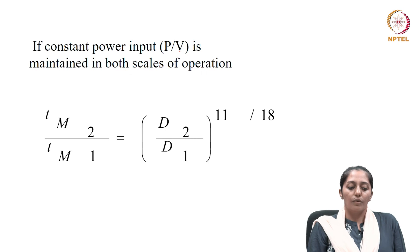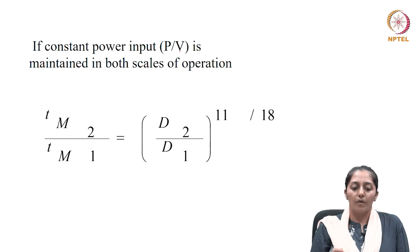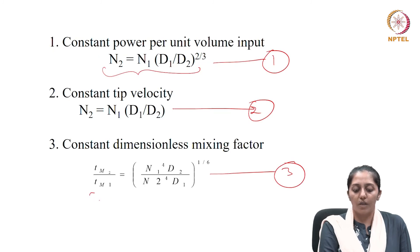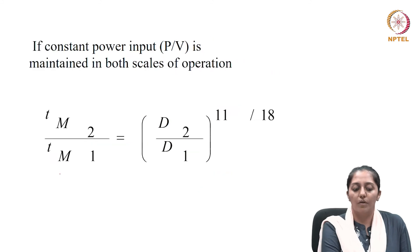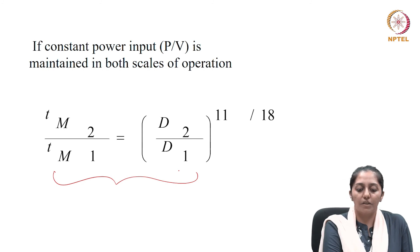Reviewing the correlations: for constant power per unit volume, the correlation between impeller speeds and diameters is given by the N³Di² relationship. For constant tip velocity NDi, the correlation is straightforward. For constant dimensionless mixing factor — recall equation 1 — the corresponding correlation applies. If we additionally apply constant power input per unit volume at both scales alongside constant mixing factor, correlation 3 can be further reduced.